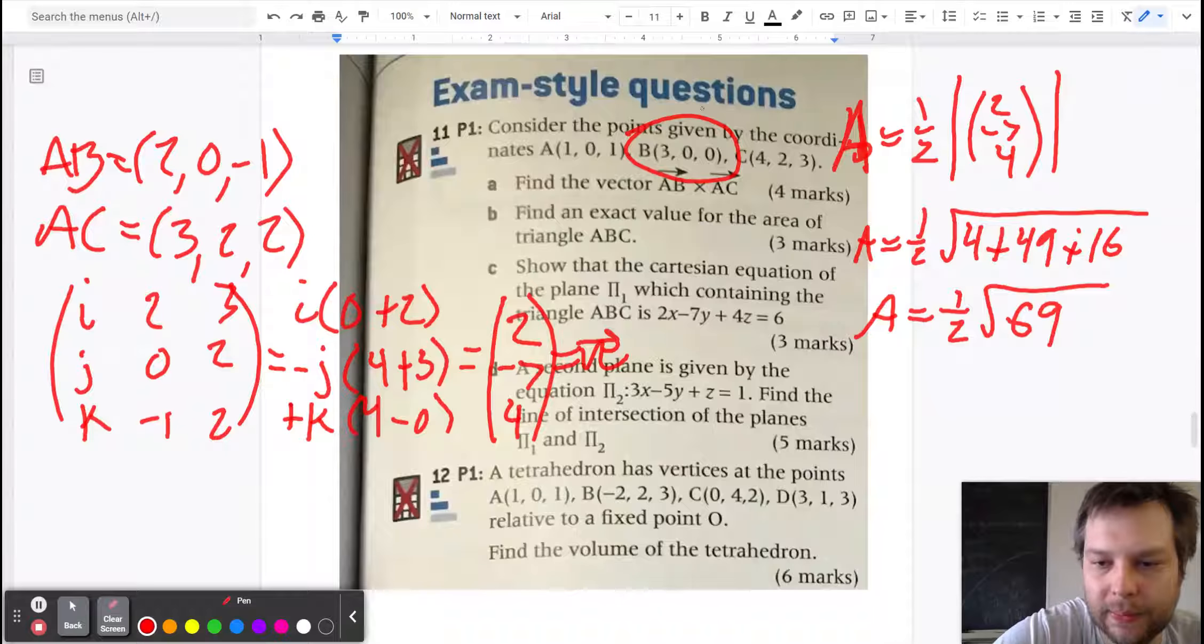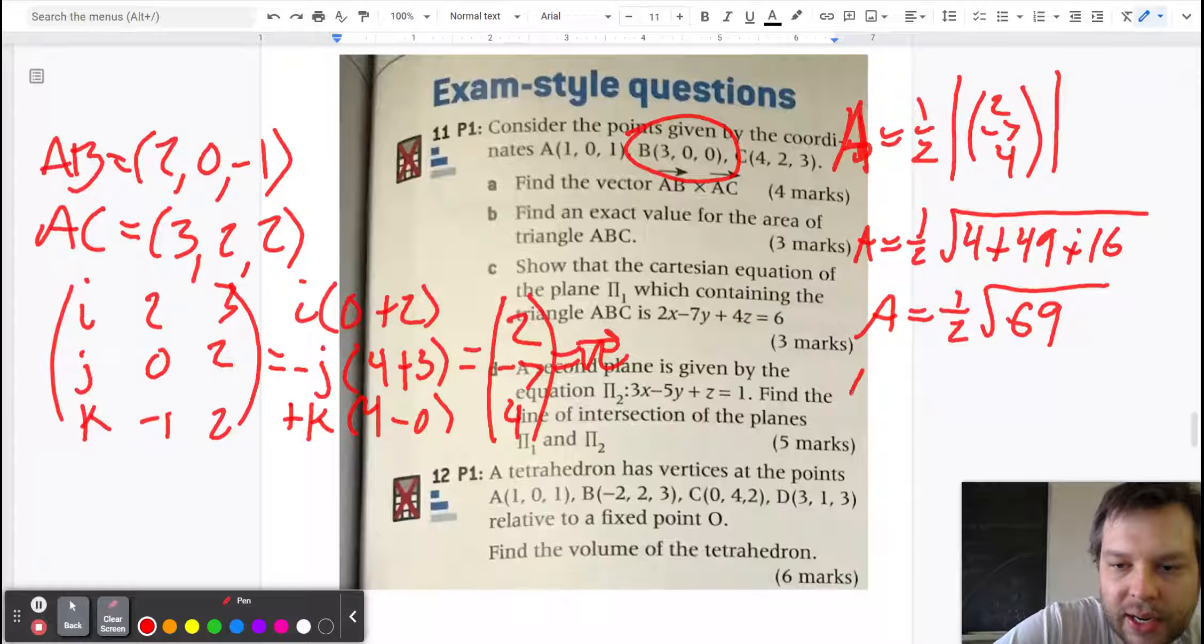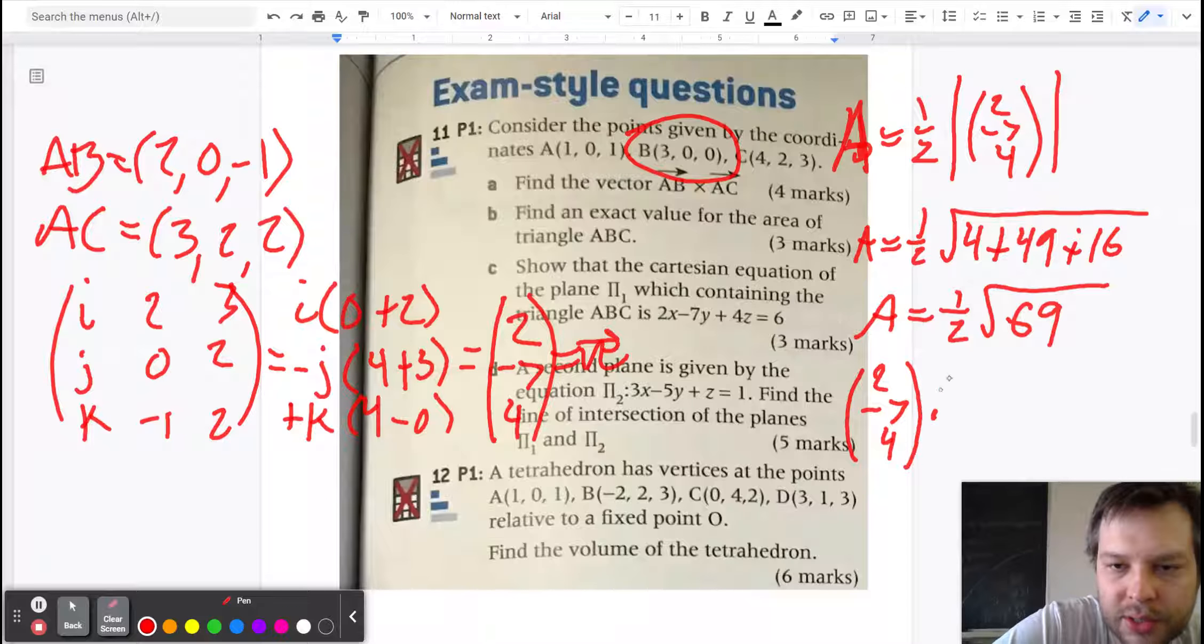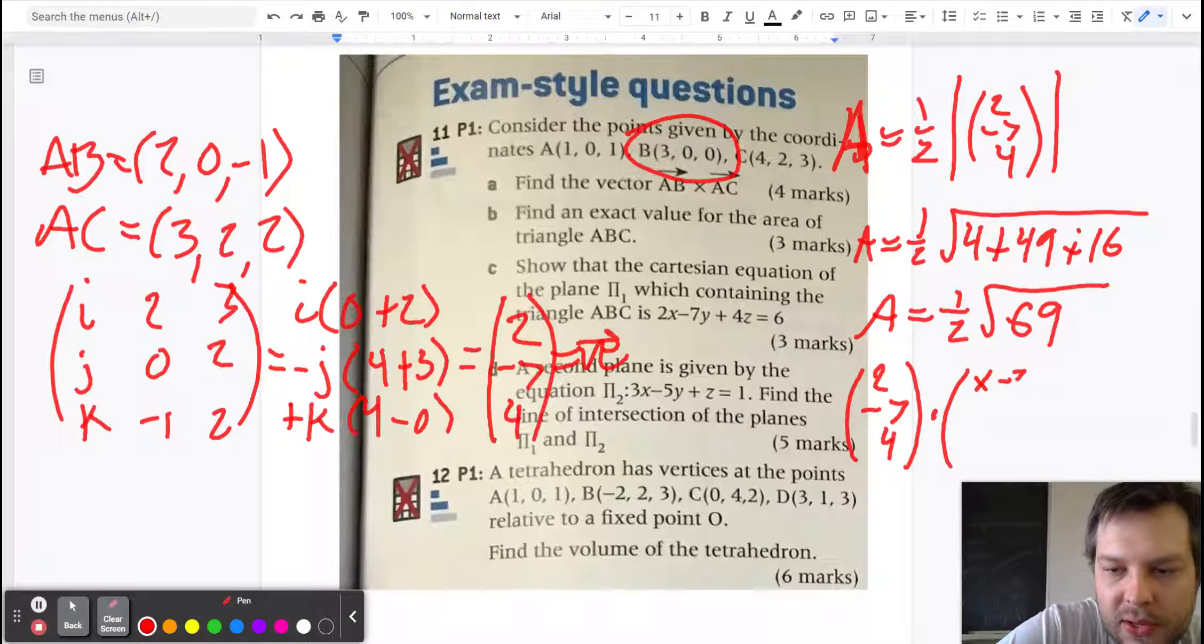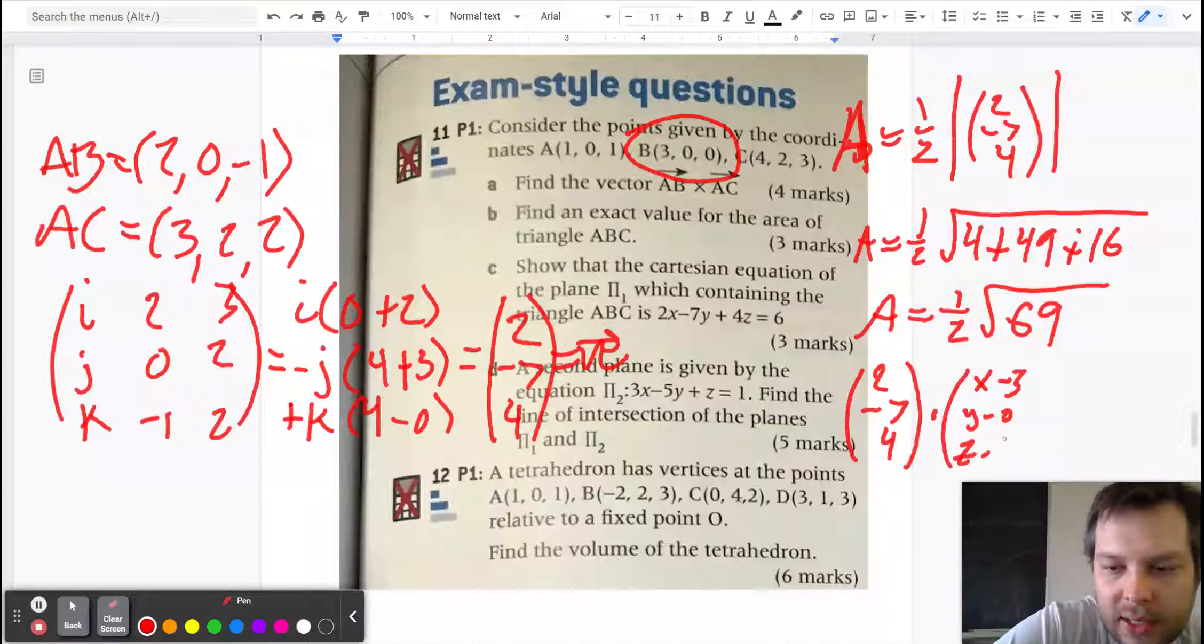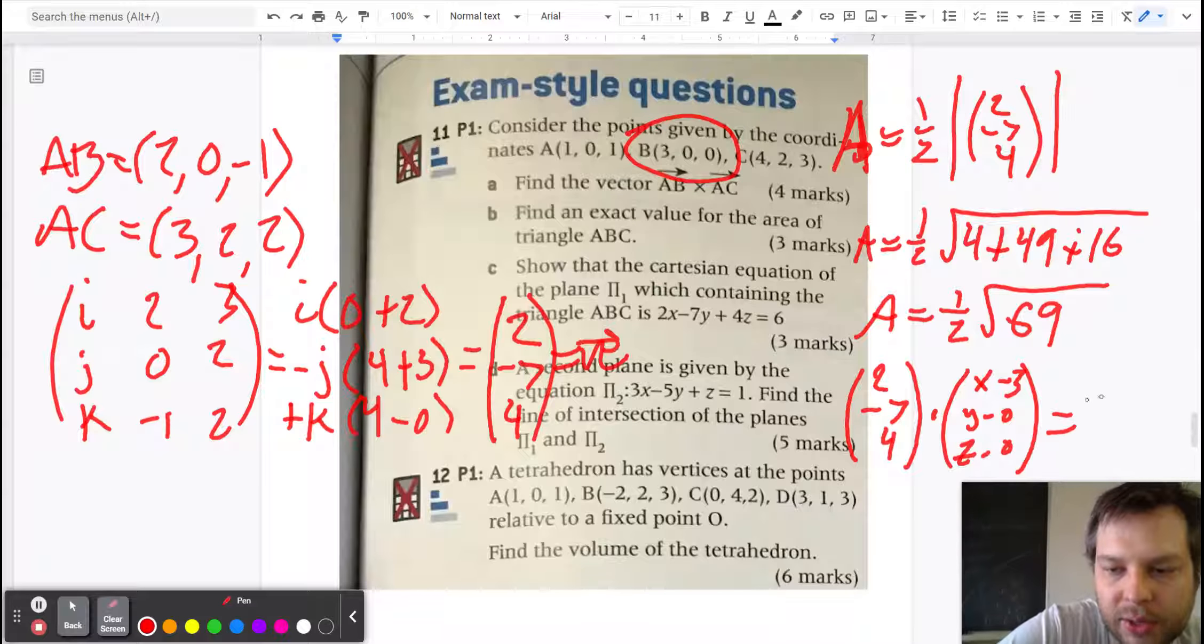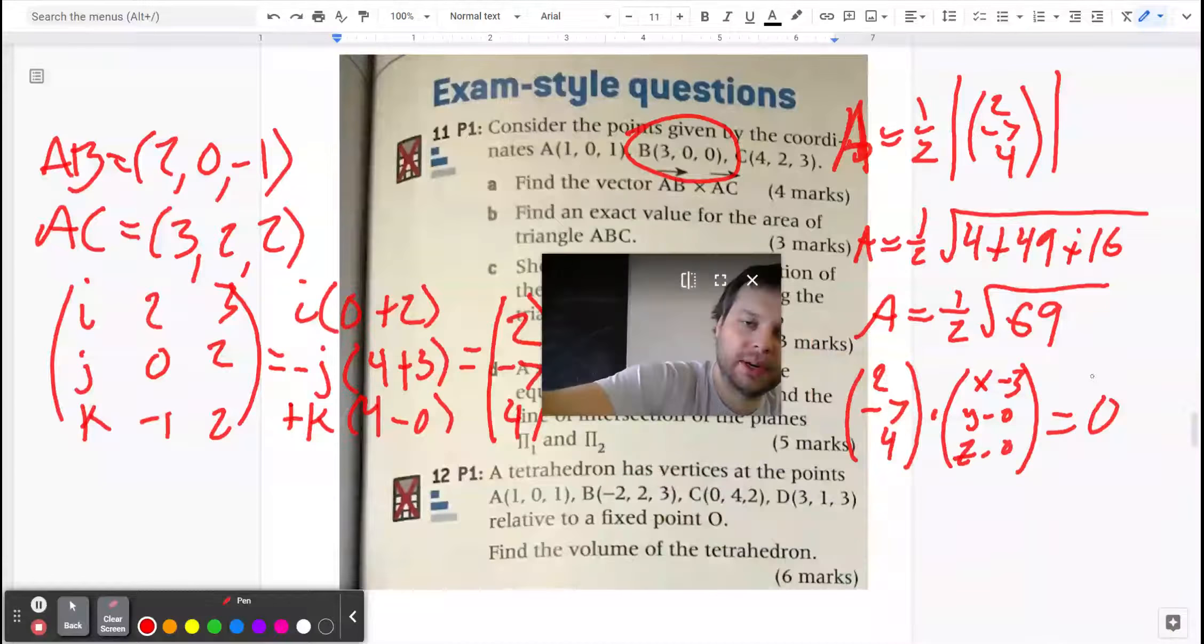So what we're going to do is write down (2, -7, 4) dotted with (x-3, y-0, z-0) and that will equal zero, because the dot product of any two perpendicular vectors must be zero.